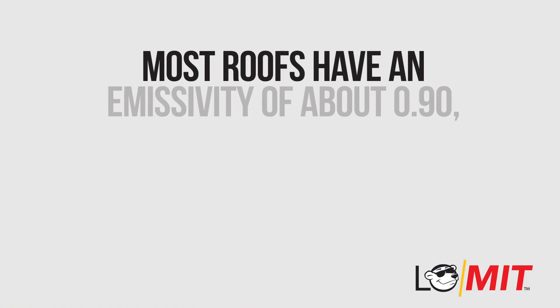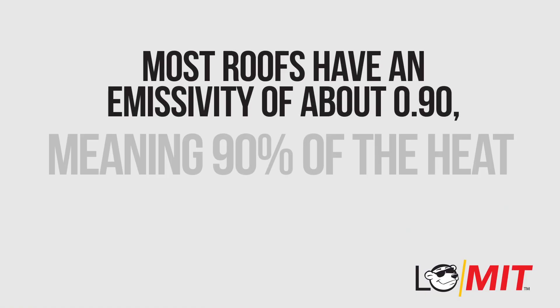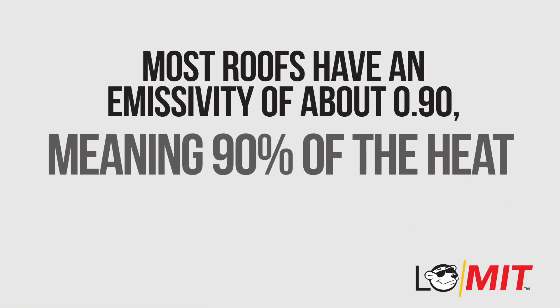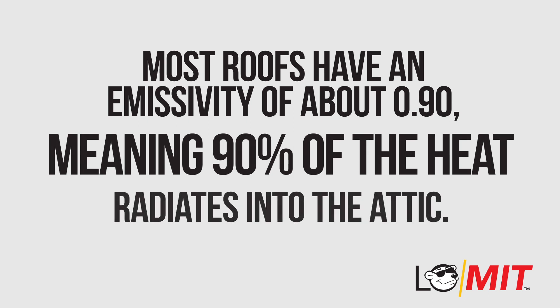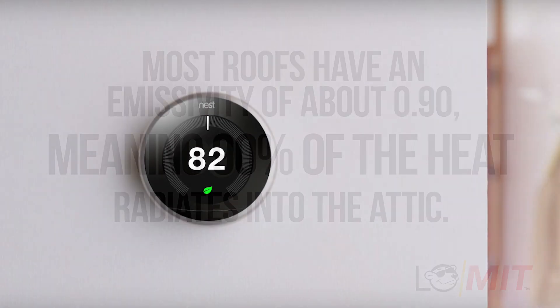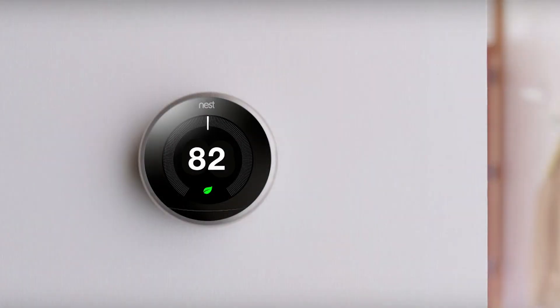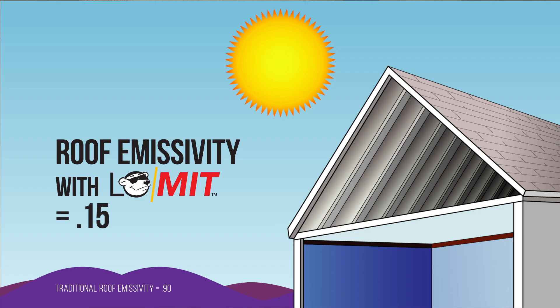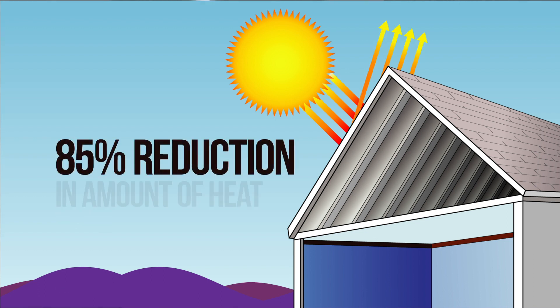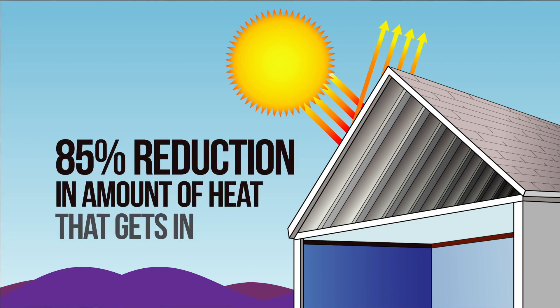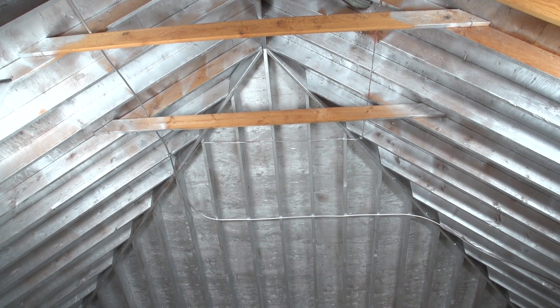Most roofs have an emissivity of about 0.9, meaning 90% of the heat radiates into the attic. Your home gets hotter, your family swelters, and your AC works overtime. Low Mitt spray-on attic heat barrier lowers the roof's emissivity to just 0.15, a whopping 85% reduction in the amount of heat that gets in, helping you and your house stay cool.